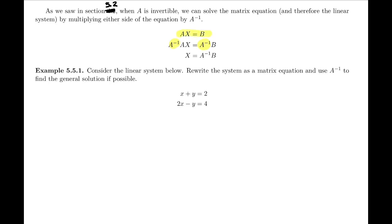Starting with Ax equals B, we multiply both sides by A inverse and end up with x equals A inverse times B. That hinges on A being invertible. Let's apply that approach to the following example. We're given a linear system and asked to rewrite it as a matrix equation and use A inverse to find the general solution. The matrix equation requires the coefficient matrix, there it is, the matrix of unknowns x and y, and the matrix of constants 2, 4. These are named A, capital X, and capital B.